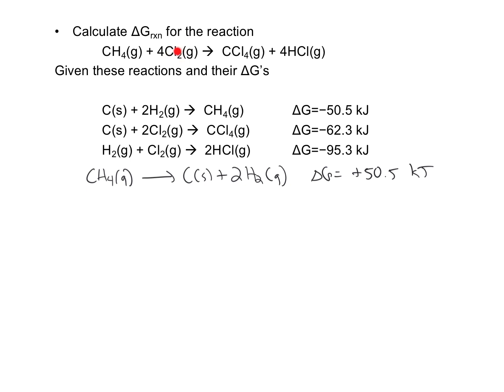Now I'll go to the next reactant: Cl2. The problem is Cl2 appears in two different reactions, so I don't know whether to use one reaction multiplied by 2, or the other multiplied by 4, or some combination. Whenever this happens, I skip that compound and move on to the next one. Usually once I get the other compounds figured out, this one falls into place. This is really common with oxygen — and in this case chlorine — appearing in many reactions, so I'll just skip it and move to the product.